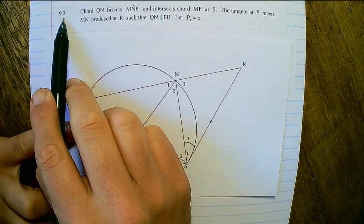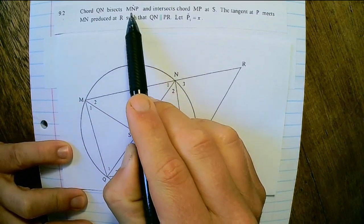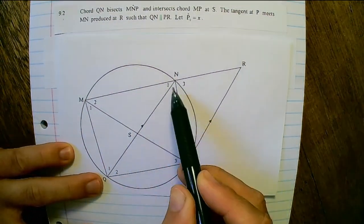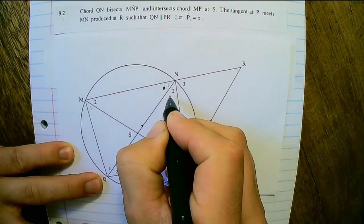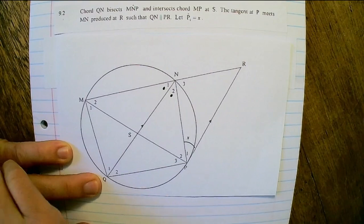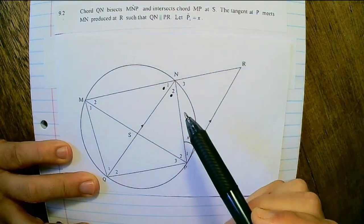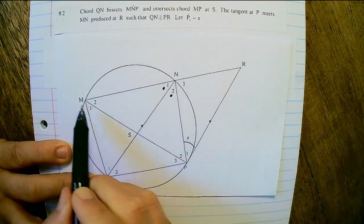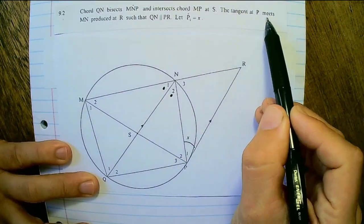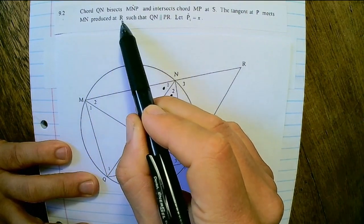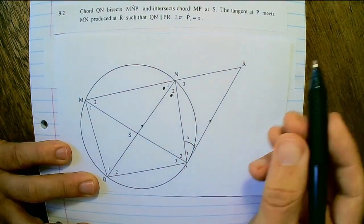9.2 Chord QN bisects MNP so angle N1 is equals to angle N2 and intersects chord MP at S. So we intersect this chord at S. The tangent at P meets MN produced at R such that QN is parallel to PR. Let P1 be equal to X.